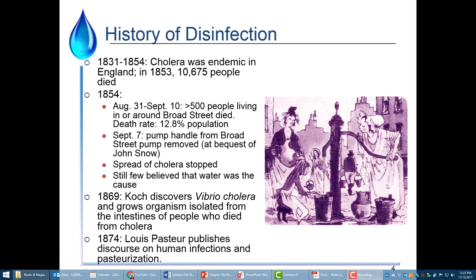Cholera is one of the types of pathogens we worried a lot more about back in the day. Cholera was endemic in England around 1853–1854, and an important event happened. John Snow requested that they remove a handle from a particular pump — the Broad Street pump — and the spread of cholera stopped. Not too many people believed it was the water yet. Then in 1869, Koch discovered Vibrio cholerae, the actual organism, and isolated it from people who had died from cholera. They began to tie these organisms to diseases. In 1874, Louis Pasteur published his Discourse on Human Infections and Pasteurization.